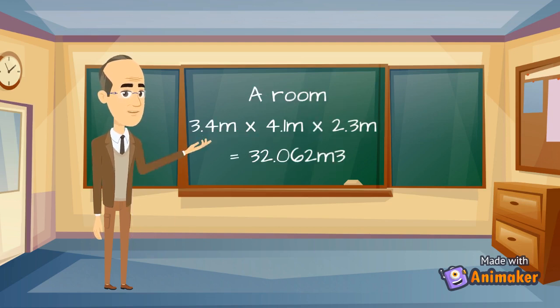For example, a room measuring 3.4 multiplied by 4.1 multiplied by 2.3 equals 32.062 meters cubed.